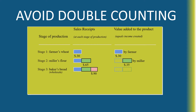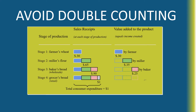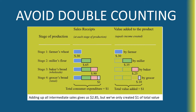And then the miller, after they sell this flour to the baker, the baker can turn the flour into bread and sell the loaf to the grocery store for 90 cents. Then the grocery store brings the bread together with other groceries and can sell this loaf of bread for a dollar to the consumer.